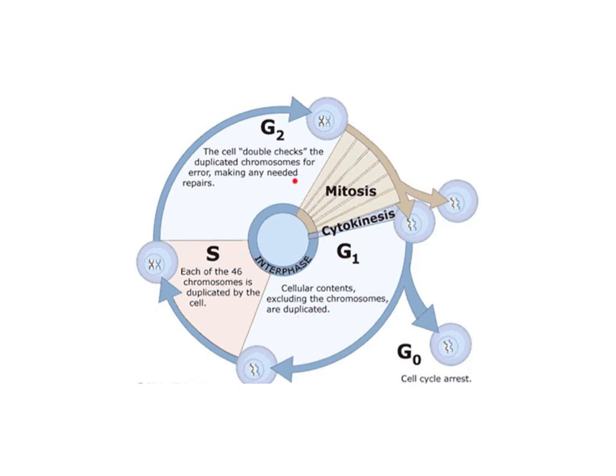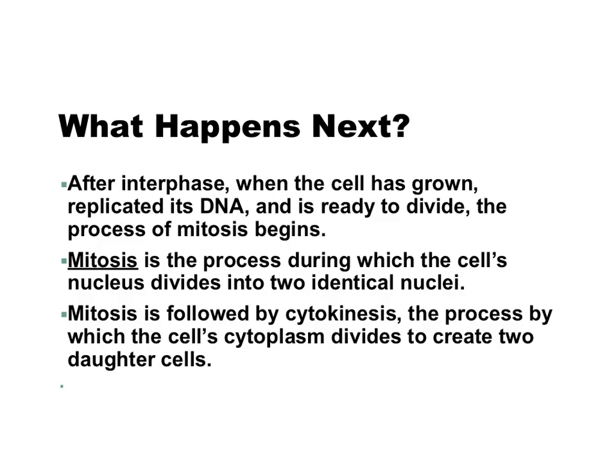After the cell has grown and replicated its DNA, it's ready to divide, and then the process of mitosis begins. Mitosis is the process during which the cell's nucleus divides into two identical nuclei. Mitosis is then followed by cytokinesis, which is the process in which the cell's cytoplasm divides and two new daughter cells are created. This is where we'll stop on the notes today, and next time we will talk about mitosis and cytokinesis.